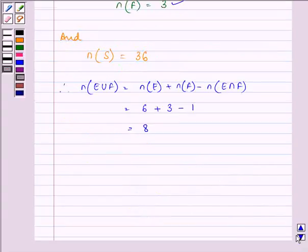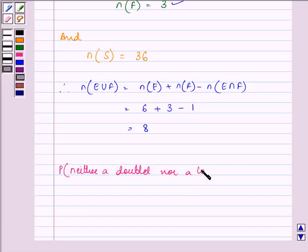The probability of getting neither a doublet nor a total of 10 will be equal to 1 minus the probability of E union F.